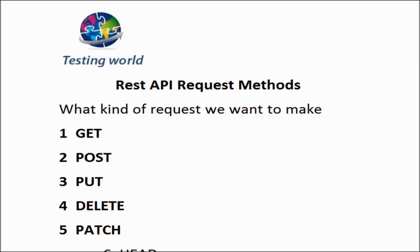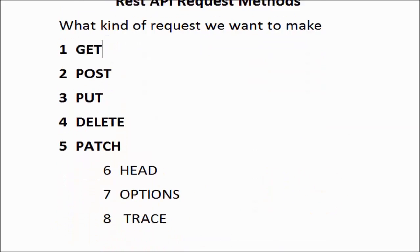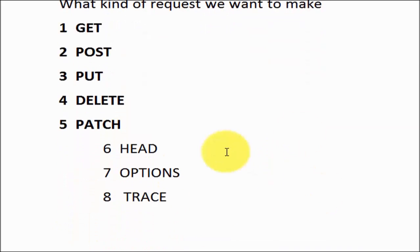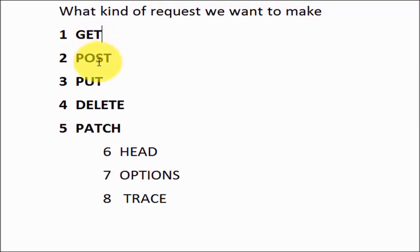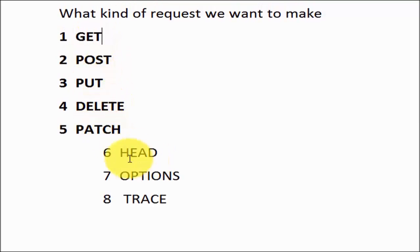We have a few common type methods: GET, POST, PUT, DELETE, and PATCH. We also have HEAD, OPTIONS, and TRACE. GET, POST, PUT, DELETE, and PATCH are the ones we use very commonly, while HEAD, OPTIONS, and TRACE are available but used very rarely.